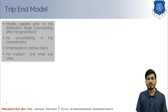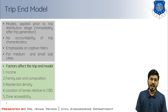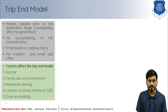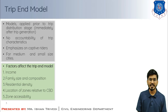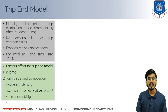Trip end models allocate a portion of total travel demand to different modes available for medium and small size cities. This model assumes a few principal factors which affect the modal split: income, family size and composition, residential density, location of zones relative to the CBD area, and zone accessibility. All modal split factors are associated with the characteristics of routes and land use as well.